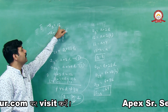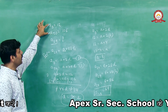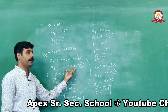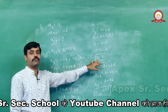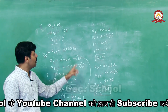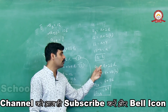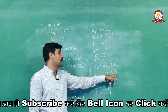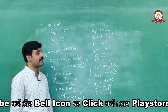एक बार review: A3 और A50 given थे, find करना था A29। दोनों को general form में लिखा — A + 2D और A + 49D। दोनों equations solve करके common difference D = 2 और first term A = 8 find किये। फिर A29 = A + 28D में substitute करके result 64 निकाला।